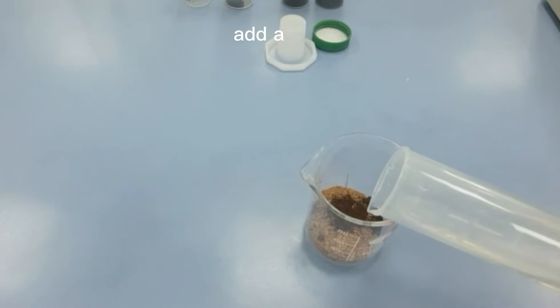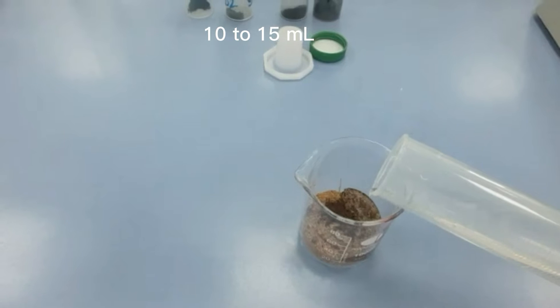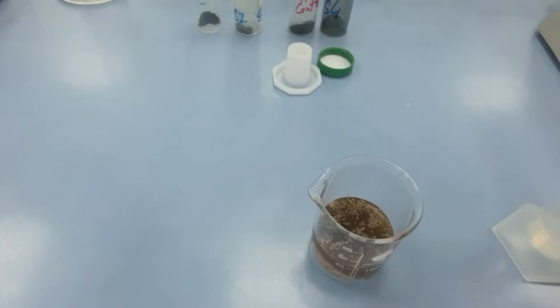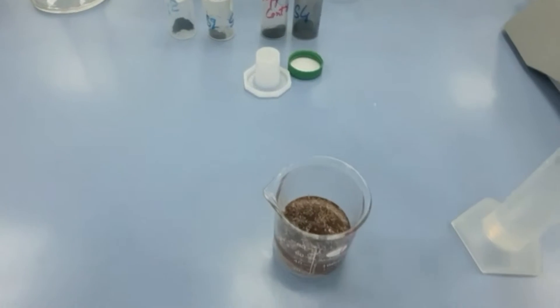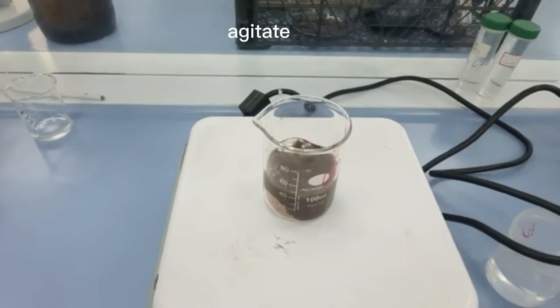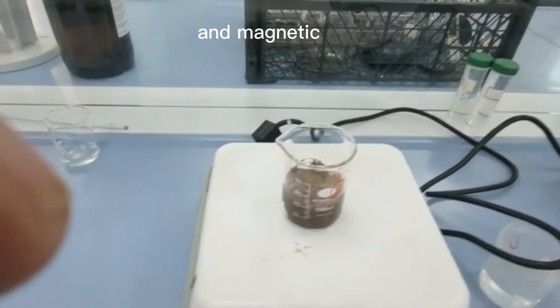Add a small volume of water, 10 to 15 ml. Agitate the mixture of date palm and magnetic particles.